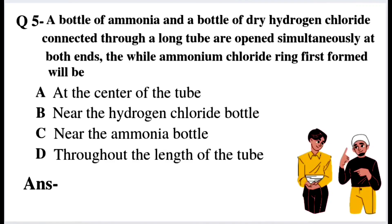So ammonia and hydrogen chloride are opened simultaneously through a long tube. Ammonia has a lower molar mass so it diffuses faster than HCl. Since ammonia travels more distance, the ammonium chloride ring forms nearer to the hydrogen chloride bottle. So option number B will be the right answer.